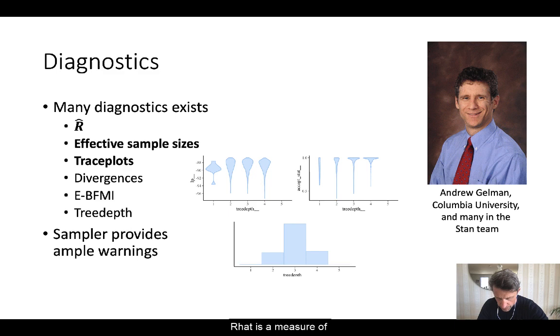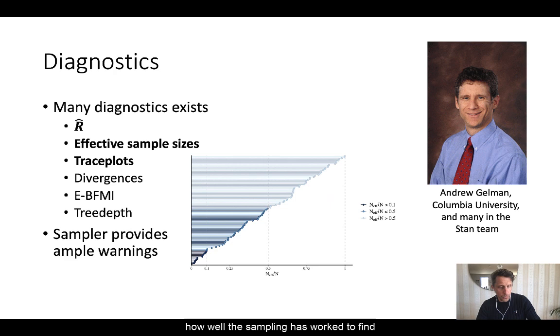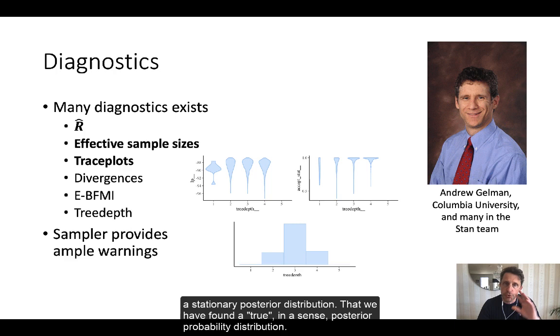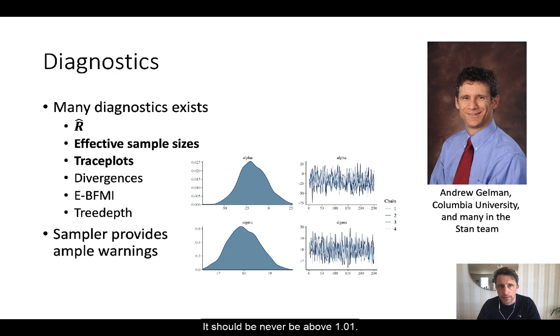R-hat is a measure of how well the sampling has worked to find a stationary posterior distribution, that we have found the true, in a sense, posterior probability distribution. It should never be above 1.01.